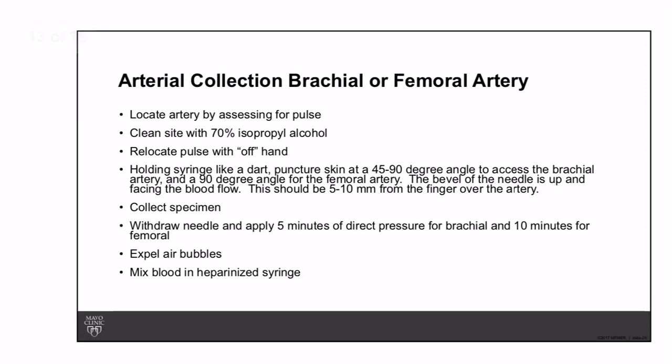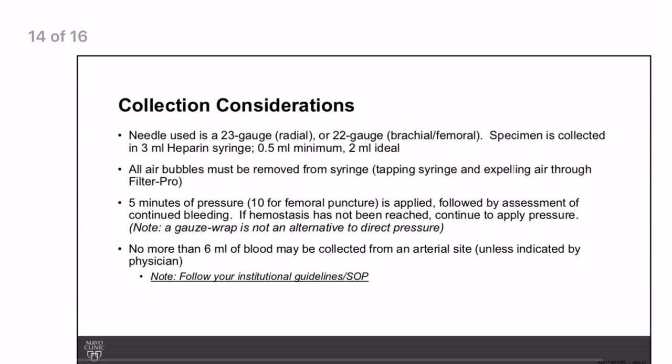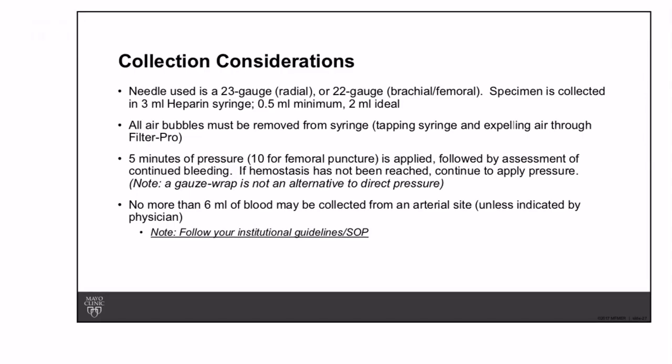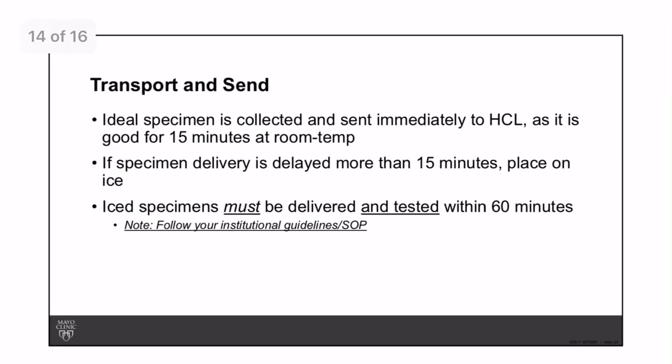For brachial or femoral artery collection, the same procedure is followed but the insertion angles differ: 45 to 90 degrees for the brachial artery, and 90 degrees for the femoral artery. Additionally, a 23-gauge needle is used for the radial artery, while a 22-gauge needle is used for the brachial artery.